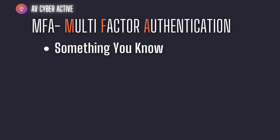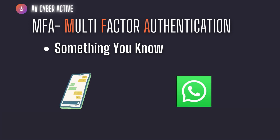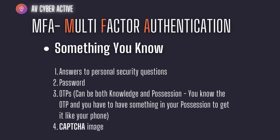Number one: something you know. Have you ever encountered a situation where logging into a service suddenly asks you a security question, asks you to enter an OTP sent to your phone, or even your WhatsApp asks for your PIN? This is a perfect example of knowledge — something you know. Examples include answering security questions, entering your password, OTPs sent via SMS, or even CAPTCHA. CAPTCHA is an automated test that distinguishes between humans and computers online. However, with the advancement in technology, attackers can now easily recognize CAPTCHA, so it is no longer considered secure.